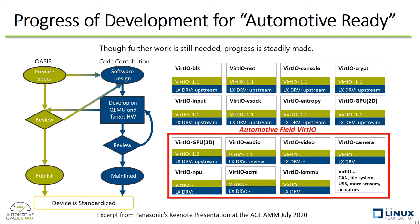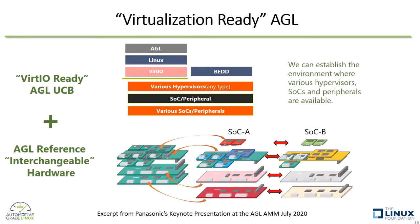Steady progress has been made consistently. As you might know, AGL has already had the reference hardware for development purposes. The AGL reference hardware has quite a modular structure, where the SoC modules and various peripheral modules can be easily replaced. Using this AGL reference hardware together with VirtIO-ready AGL unified code base, we can establish a healthy environment for the industry where we can choose arbitrary hypervisors, SoCs, and peripherals — in other words, the freedom to choose the most competitive virtualization solutions.